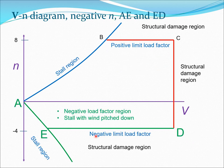Now let's look at the negative side. It is possible to have a negative load factor — this happens when the wing is pitched down too much, resulting in flow separation and a stall situation. You cannot fly in the negative limit load factor region. Typically this negative region is smaller than the positive side because the possibility of the aircraft entering this region is relatively less.